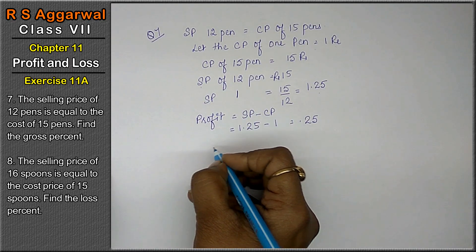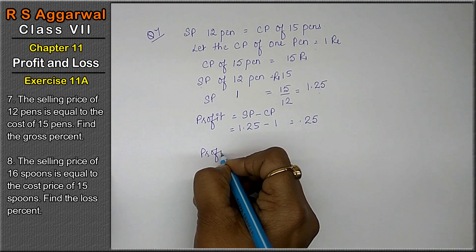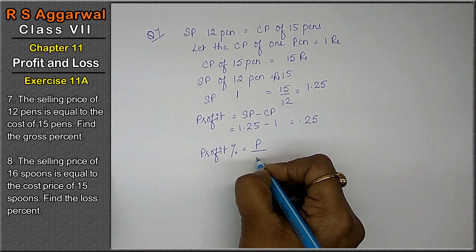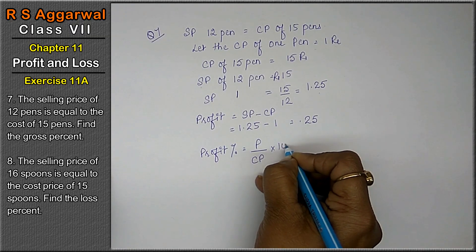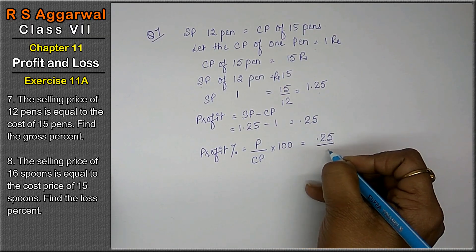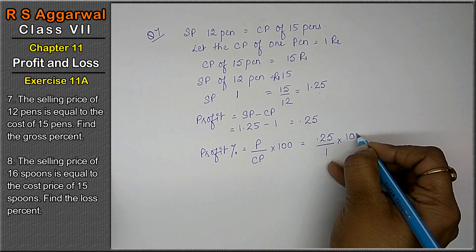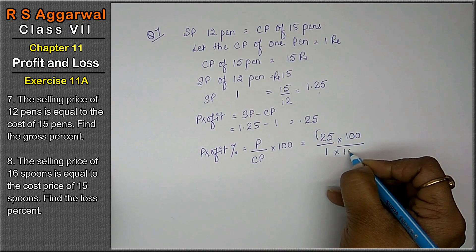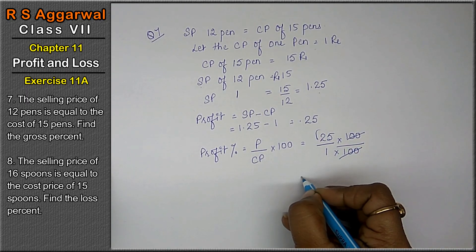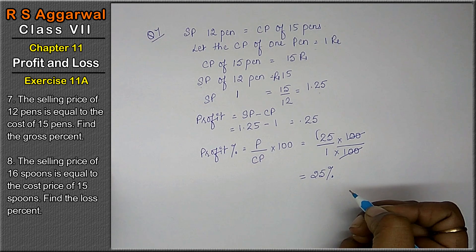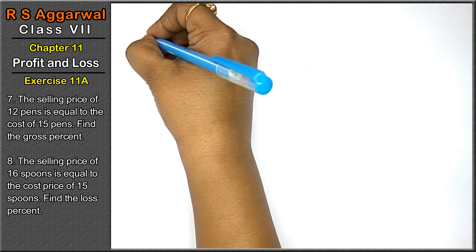Now in this case we have to find the gain percentage. Profit percentage equals to profit upon CP into 100. Profit was 0.25, CP was 1, multiply by 100. Cancel 100, the answer is 25 percent.